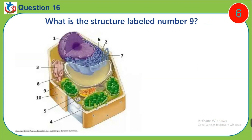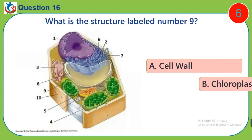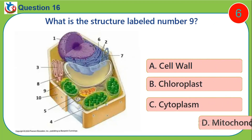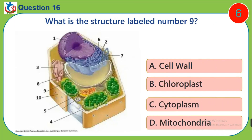Question 16. What is the structure labeled number 9? A. Cell wall. B. Chloroplast. C. Cytoplasm. D. Mitochondria.